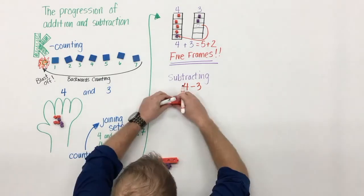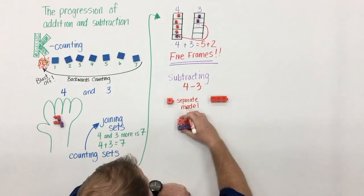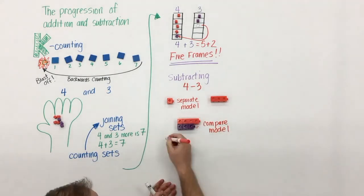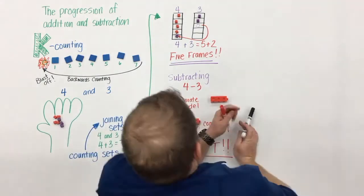So in terms of subtracting, students can have four minus three and use a separate model, or they can also use a compare model. The big piece here is that a context should always drive the strategy that students are using.